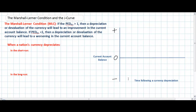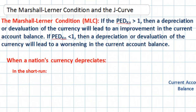If you recall from our previous lesson, we talked about the Marshall-Lerner condition, which is basically a concept that says that if the price elasticity of demand for exports and imports from a nation is greater than one — in other words, if demand for exports and imports is elastic — then a depreciation of the nation's currency will lead to an improvement in the current account balance. On the other hand, if the price elasticity of demand for exports and imports is less than one, then a depreciation will worsen the current account balance.